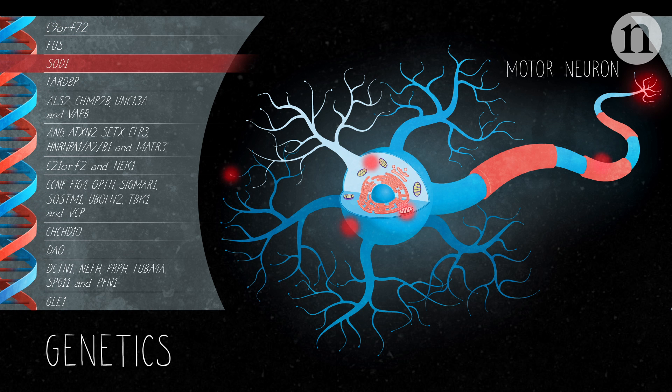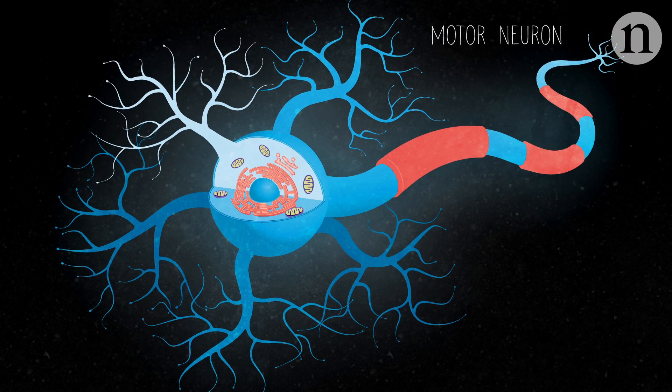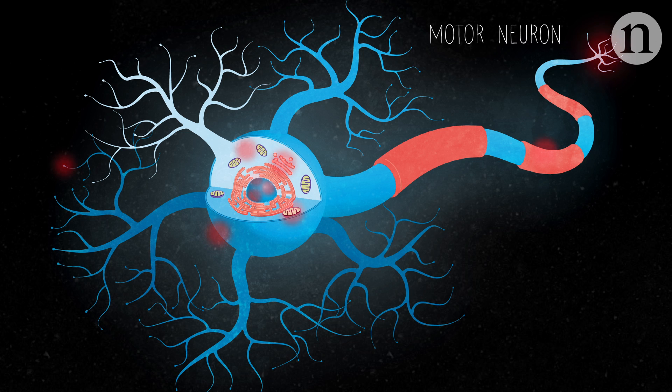By studying the genes that are altered in these patients, scientists have pinpointed processes in the neurons that might be causing ALS. It's too early to know which of these altered processes are a result of the disease and which could be a cause, but it's clear that they affect many different aspects of motor neuron function.